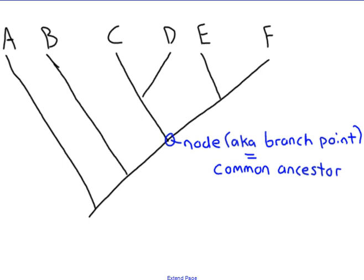So the first thing that I want to point out is a node and a node is also known as a branch point. A branch point is going to indicate a common ancestor between two species. So it's where two species diverged.